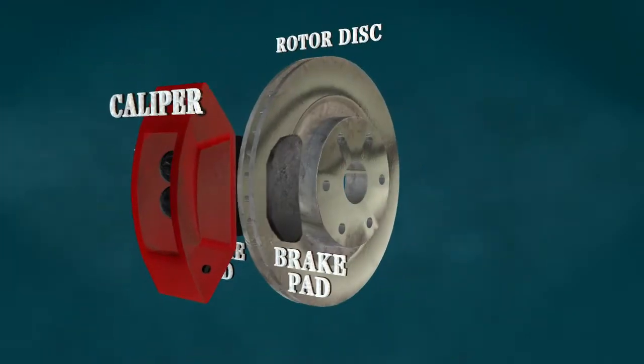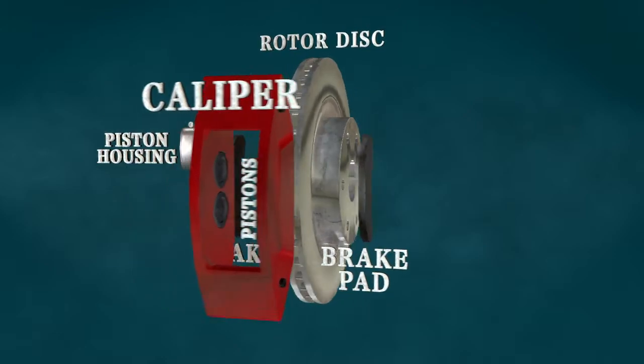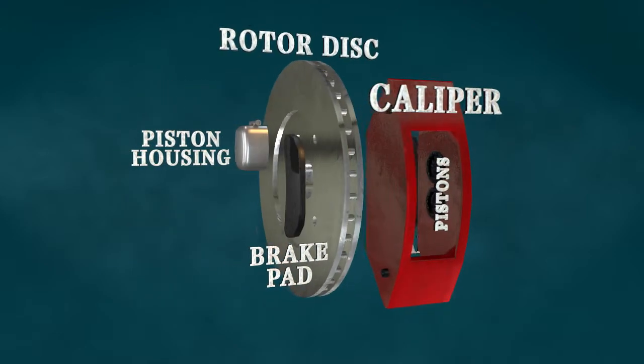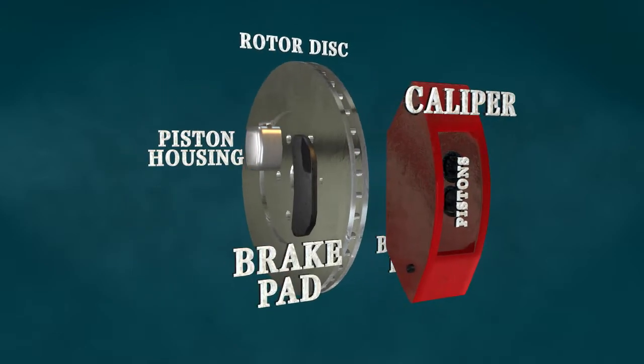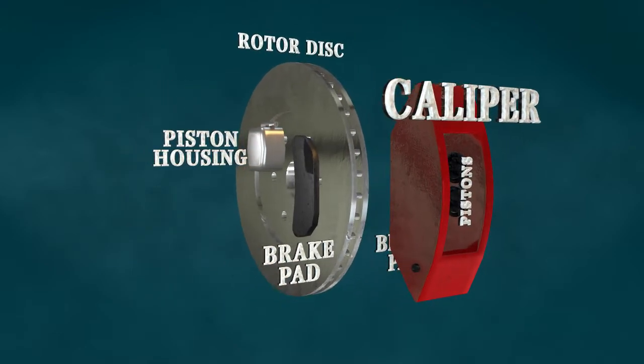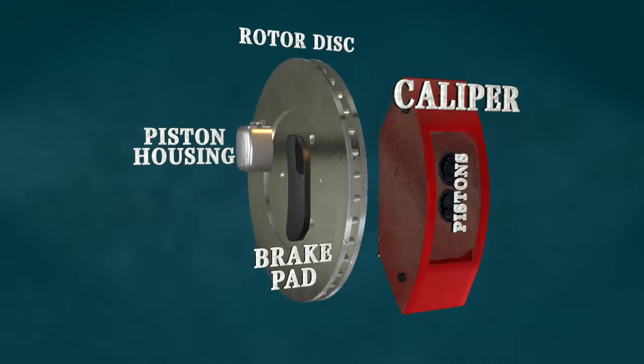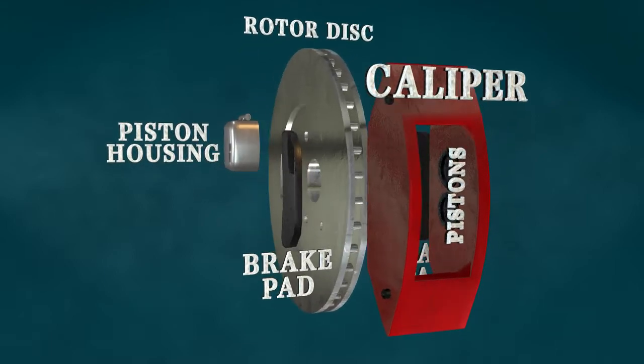The main components of a disc brake system are the rotor disc, brake pads, caliper, piston housing, and the pistons.